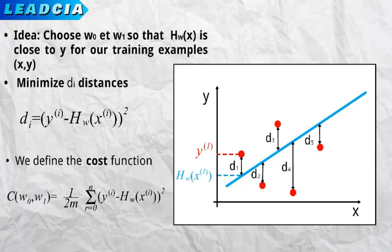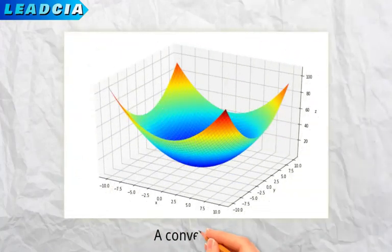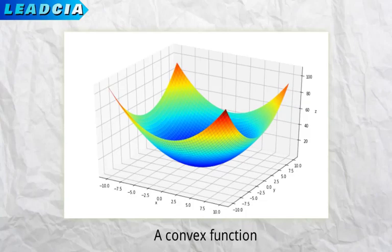So if we summarize, finding the ideal hypothesis for predicting the quantity of irrigation water essentially consists in finding the omegas that minimize the cost function. It is easier to look for this minimum if the cost function is convex. Without going into too much mathematical detail, here we show you a two variable convex function that has a single global minima.